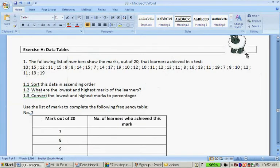So let's quickly look at that handout. It says the following list of numbers show the marks of 20 learners achieved in a test. Sort the data in ascending order, what are the lowest and the highest marks of the learners and convert the lowest and the highest marks to percentage.